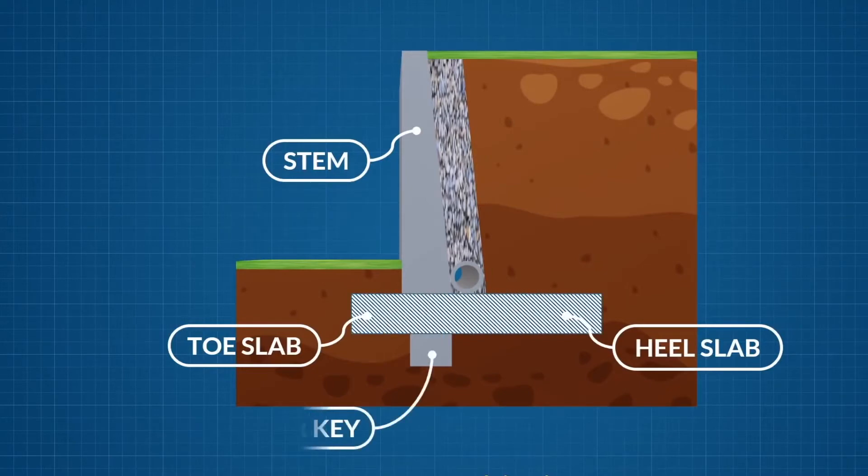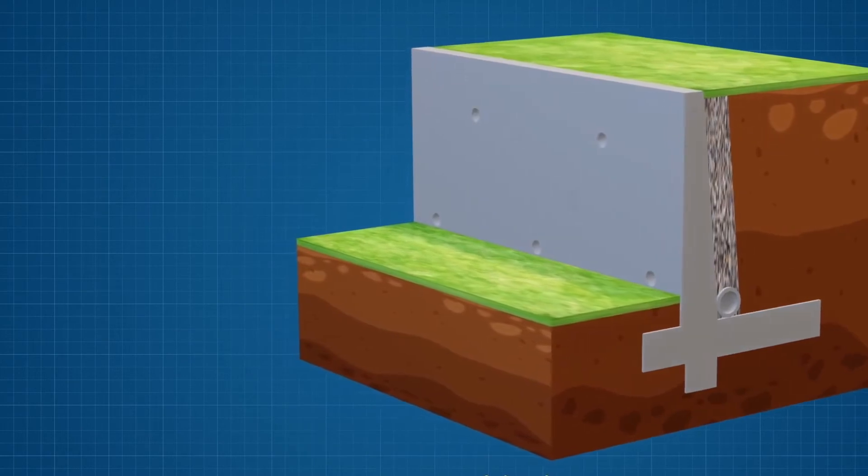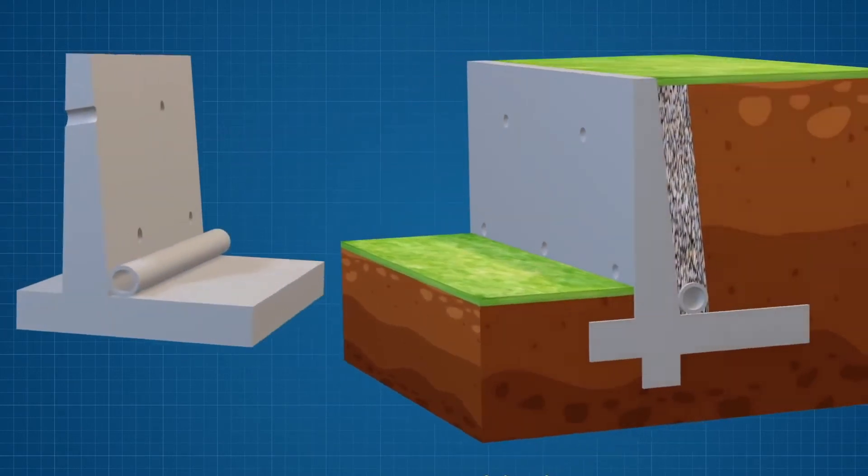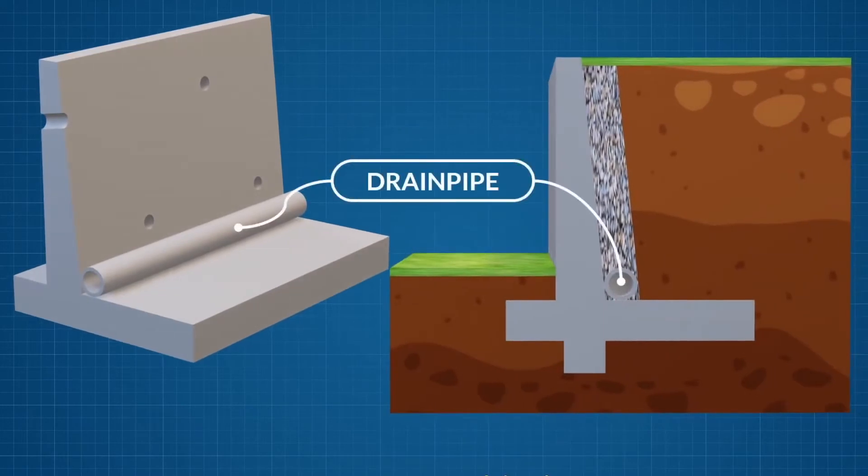Some walls may also include a shear key to resist sliding. Stems can include drainage holes. These reduce the water pressure acting directly on the wall. A drain pipe can also be provided along the back of the wall for a similar effect.